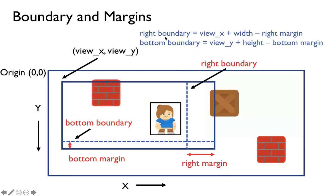Here are the formulas to compute the four boundaries. The right boundary is: view_x plus the width of the window minus the right margin. The bottom boundary is: view_y plus the height of the window minus the bottom margin. Similarly, there's also a left boundary and a top boundary. As soon as we detect that my sprite's boundaries leave those window boundaries, we make the translation accordingly.